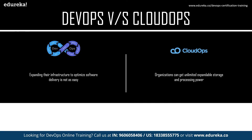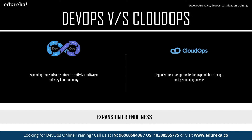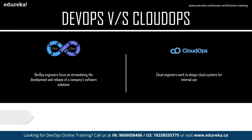The next difference is expansion friendliness. With cloud ops, organizations can get unlimited, expandable storage and processing power as per their needs. But in the case of DevOps, expanding or upgrading the infrastructure to optimize software delivery is not as easy — it is potentially expensive and a complicated procedure.